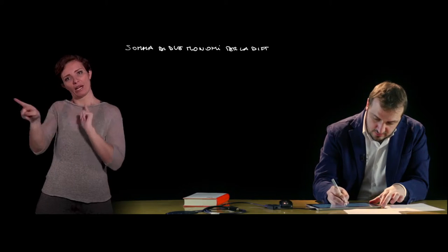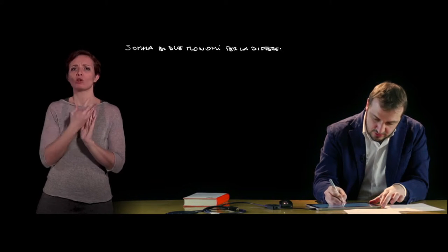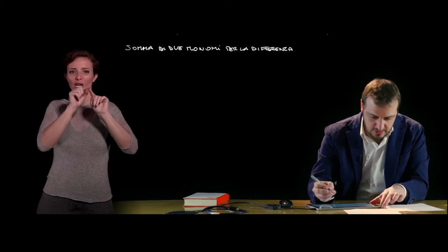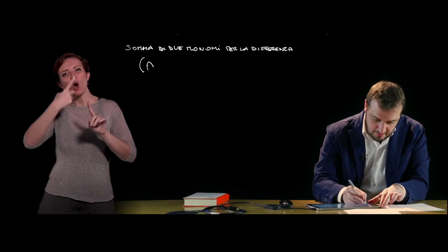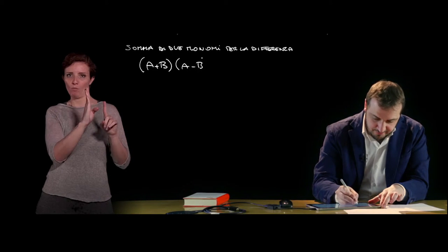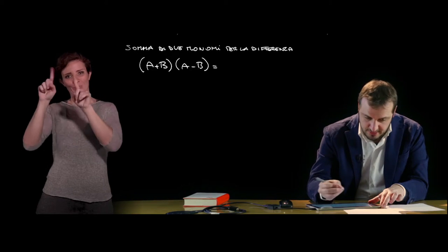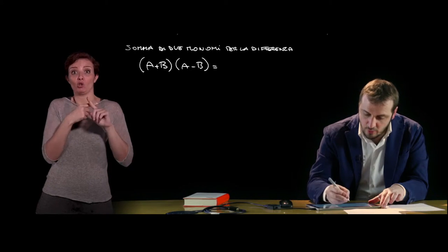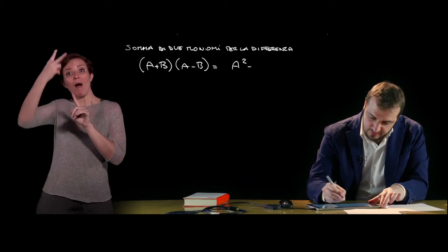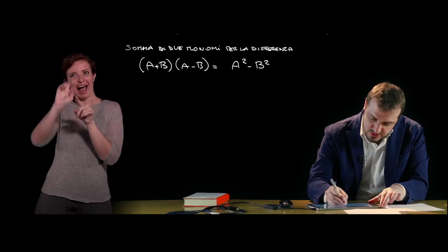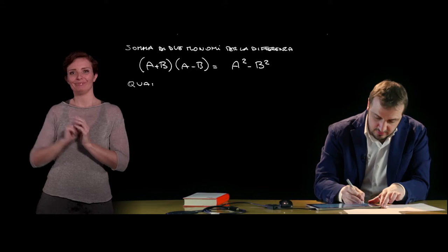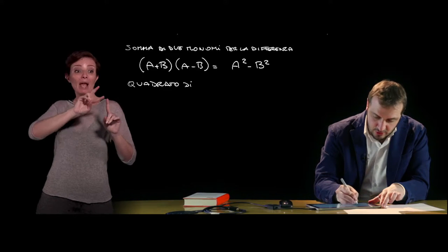It is a product we have already seen when we talked about the rationalization of radicals, in particular the second type. We have (a + b) multiplied by (a - b). The product of the sum and the difference of two monomials gives a binomial constituted by the square of the first monomial minus the square of the second monomial.